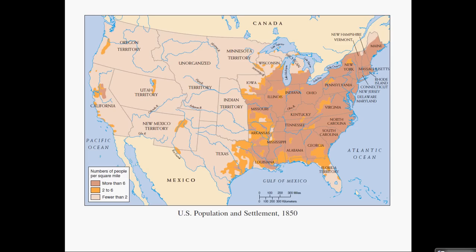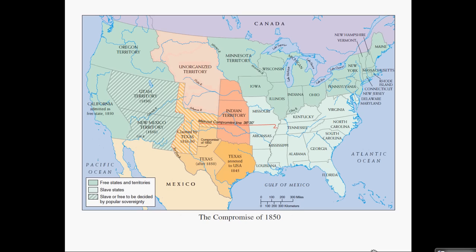By 1850, westward expansion was in the equation, but remember that the Mexican-American War had just ended. California, New Mexico, and Utah had all been ceded from Mexico to the United States when Mexico lost the Mexican-American War in 1848. That treaty was called the Treaty of Guadalupe Hidalgo, and I'll spell that for you in class.